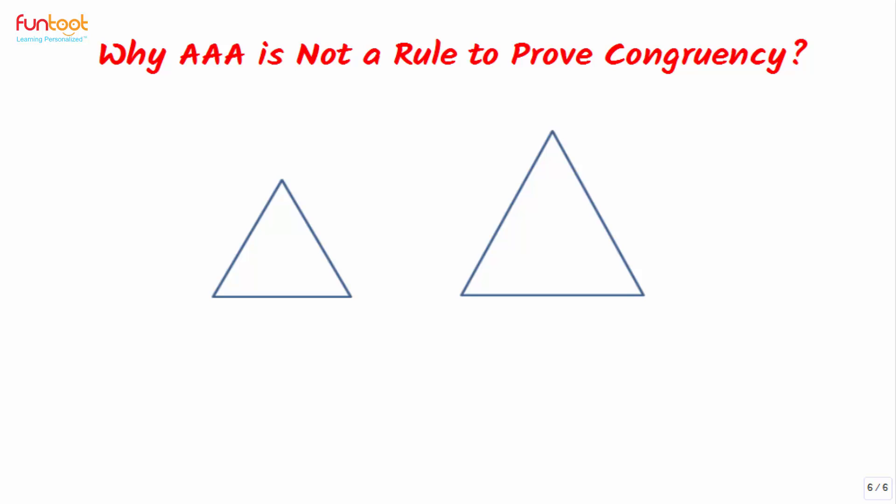Let's discuss why AAA is not a rule to prove congruency. Two students were asked to draw two triangles with angles 50 degrees, 60 degrees and 70 degrees.